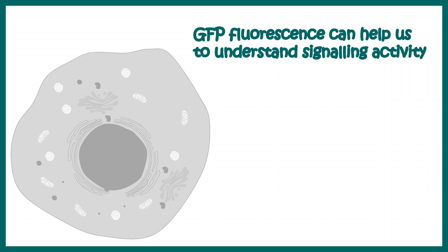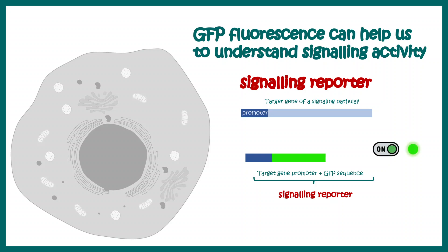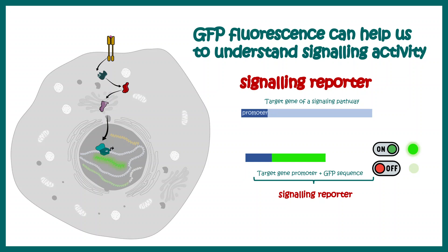GFP fluorescence can also help us understand signaling dynamics. In a signaling pathway where the ultimate step is transcription of a target gene, we can take the target gene's promoter and attach it with a GFP sequence so it works like a signaling reporter. Whenever the signaling pathway is on, there would be fluorescence; whenever it is off, there would be no fluorescence. Whenever the GFP is transcribed and translated, we can see and quantify the fluorescence to understand signaling dynamics in real time.